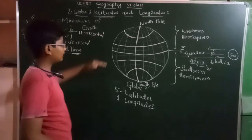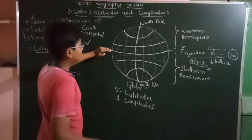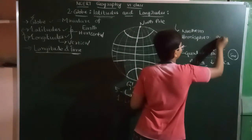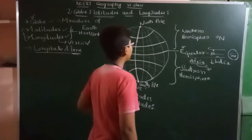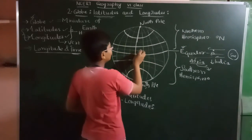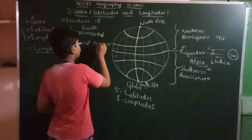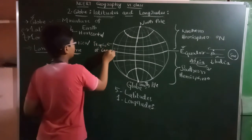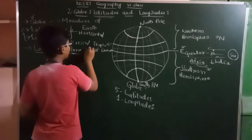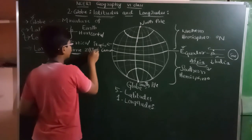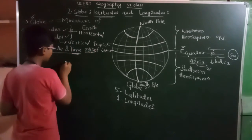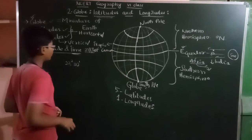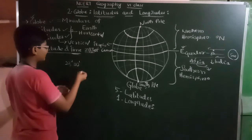Now let's learn the important latitudes above the equator, which we call degree north. This is the Tropic of Cancer. The Tropic of Cancer is at 23 and a half degrees north. This 23 and a half degrees north is also written as 23 degrees and 30 minutes.